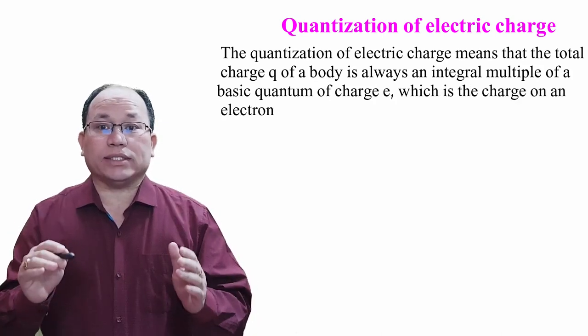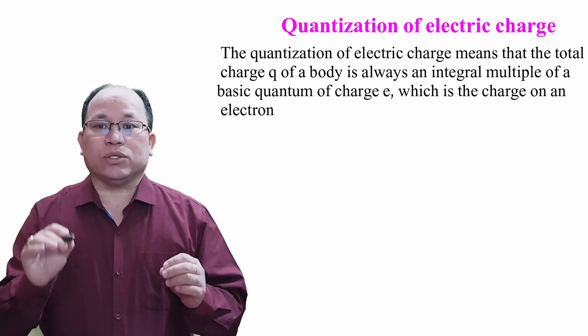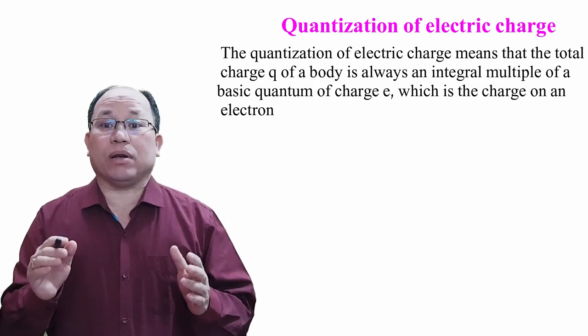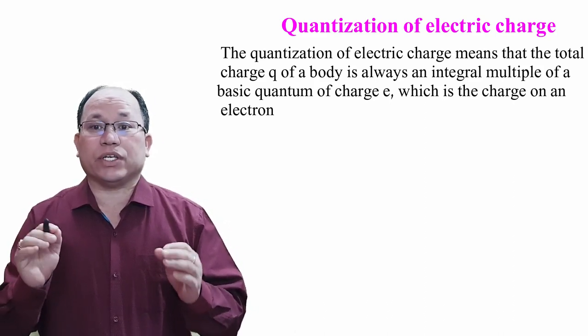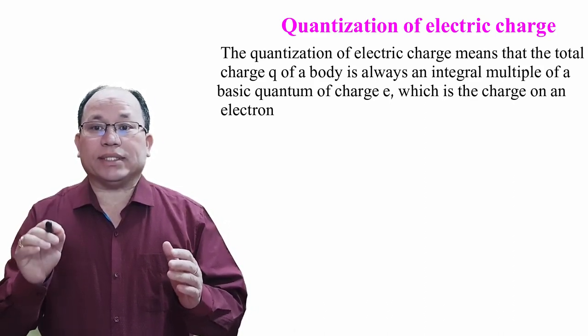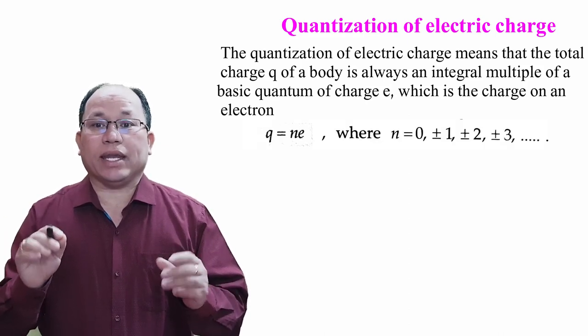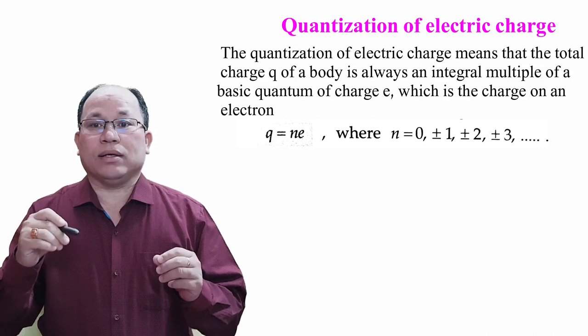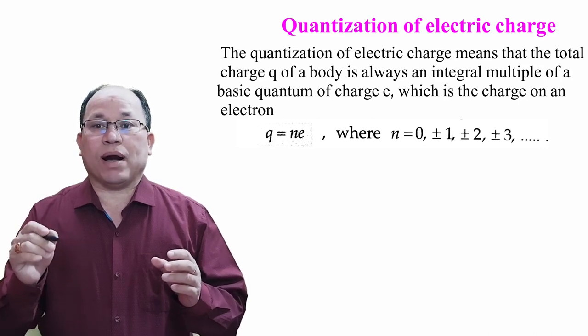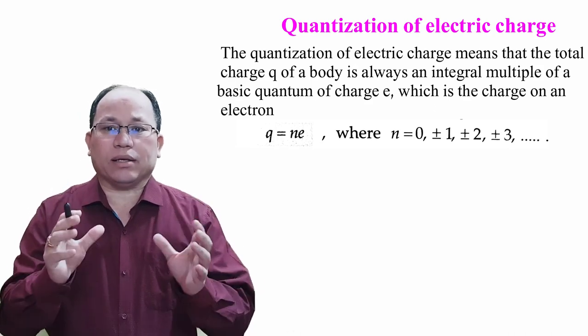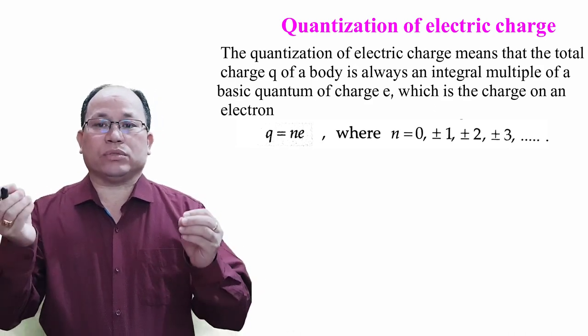The quantization of electric charge means that the total charge q of a body is always an integral multiple of a basic quantum of charge e, which is the basic charge on an electron. That is, q = ne, where n is the integer 0, ±1, ±2, and so on.